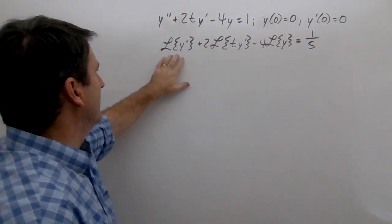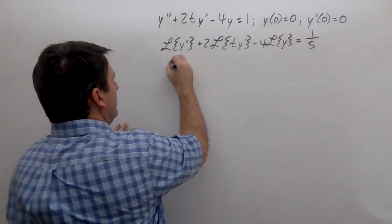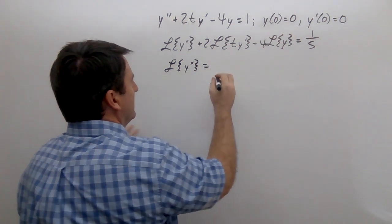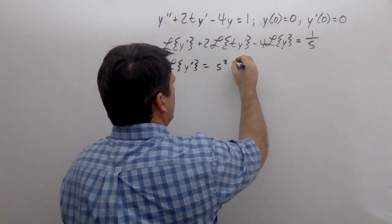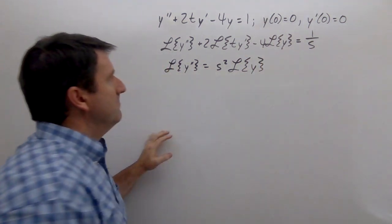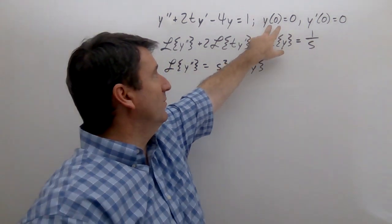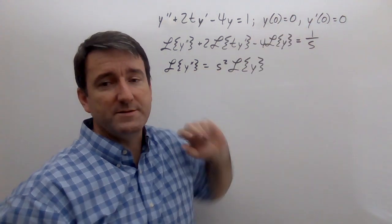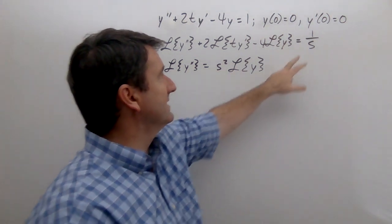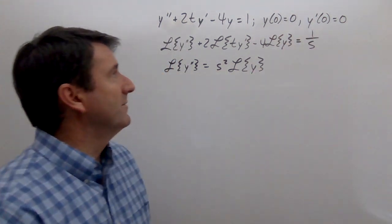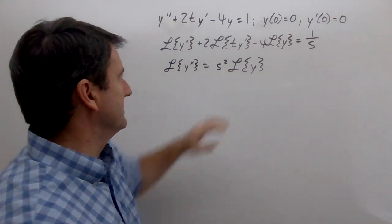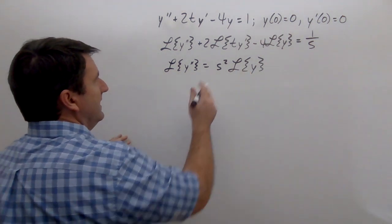Now, we know that the Laplace transform of y double prime is going to be equal to s squared times the Laplace transform of y, minus s times y(0). But y(0) is 0 in this problem, so that's just 0. And then minus y prime(0), which is also 0. So the Laplace transform of the second derivative simplifies to just s squared times L{y}.